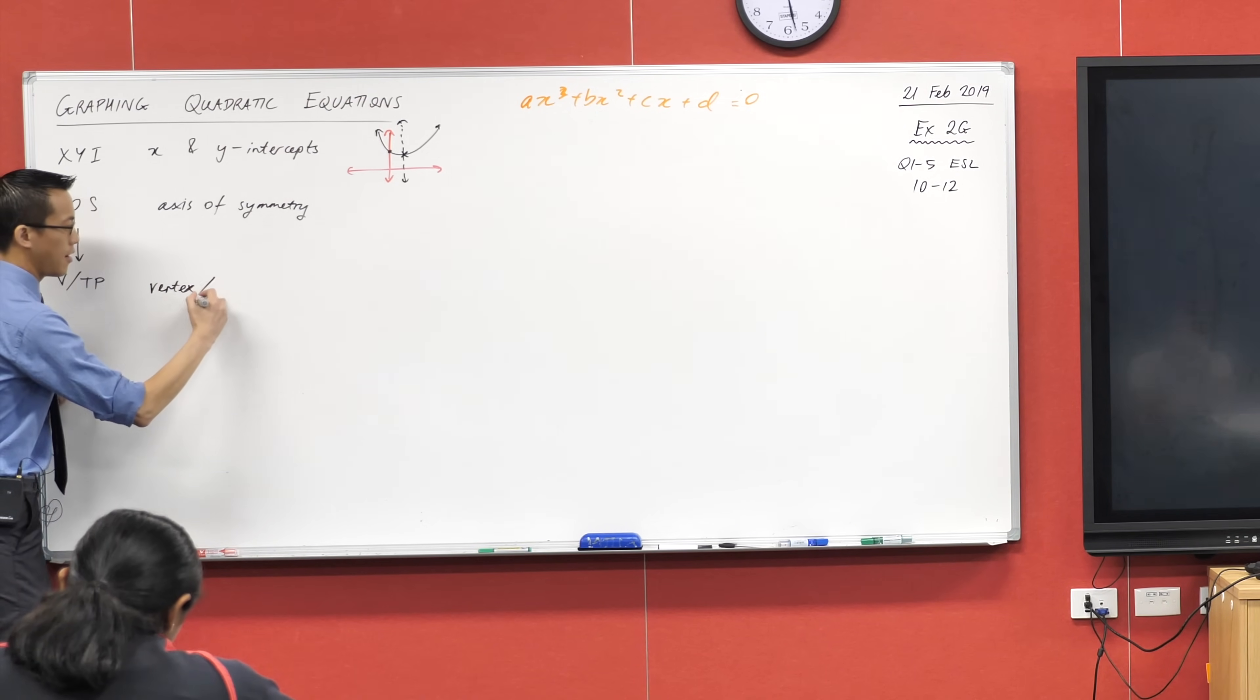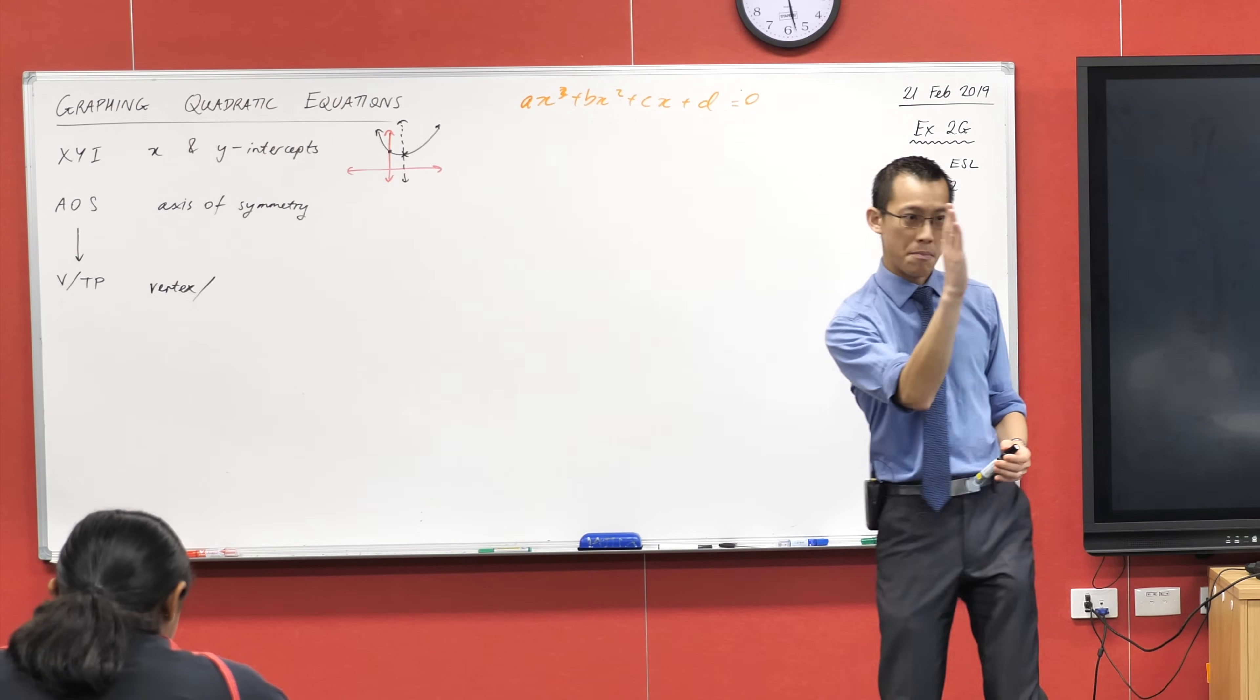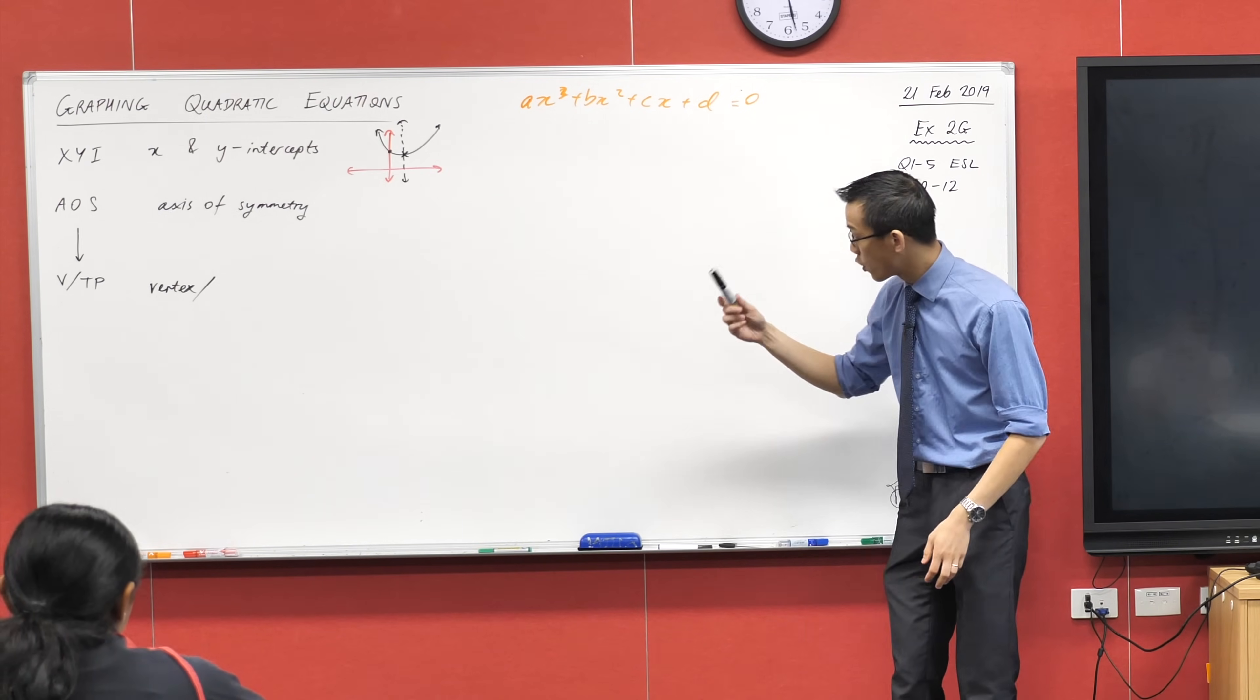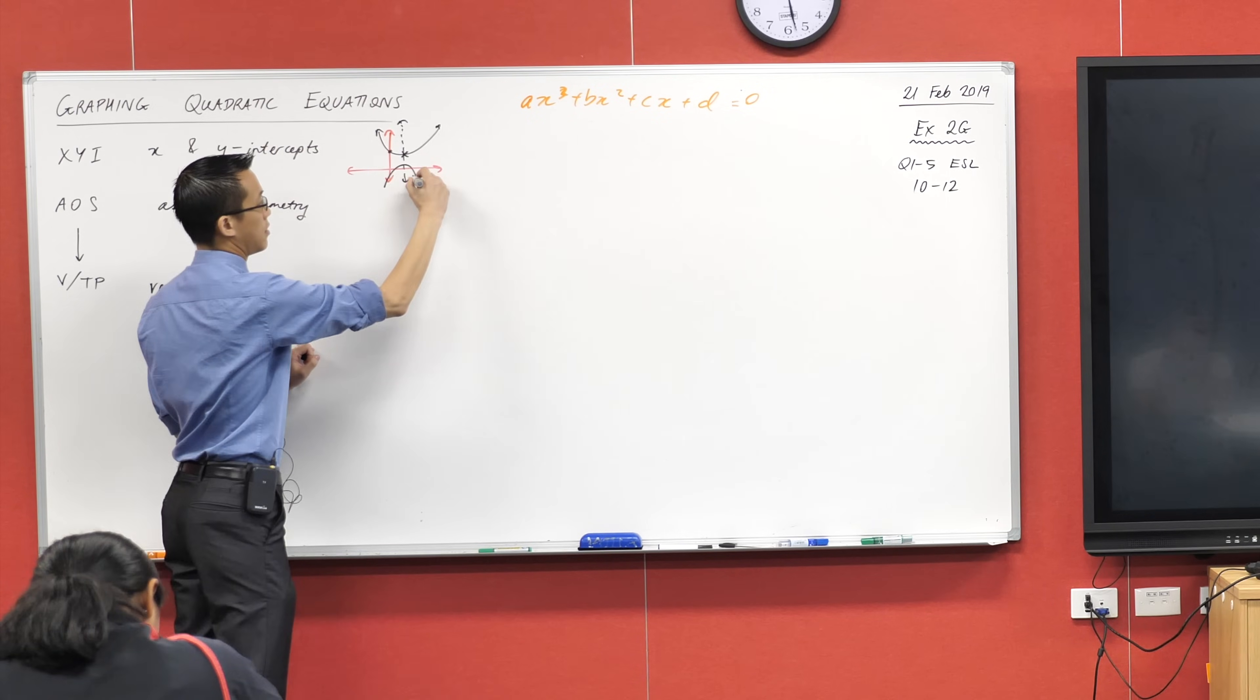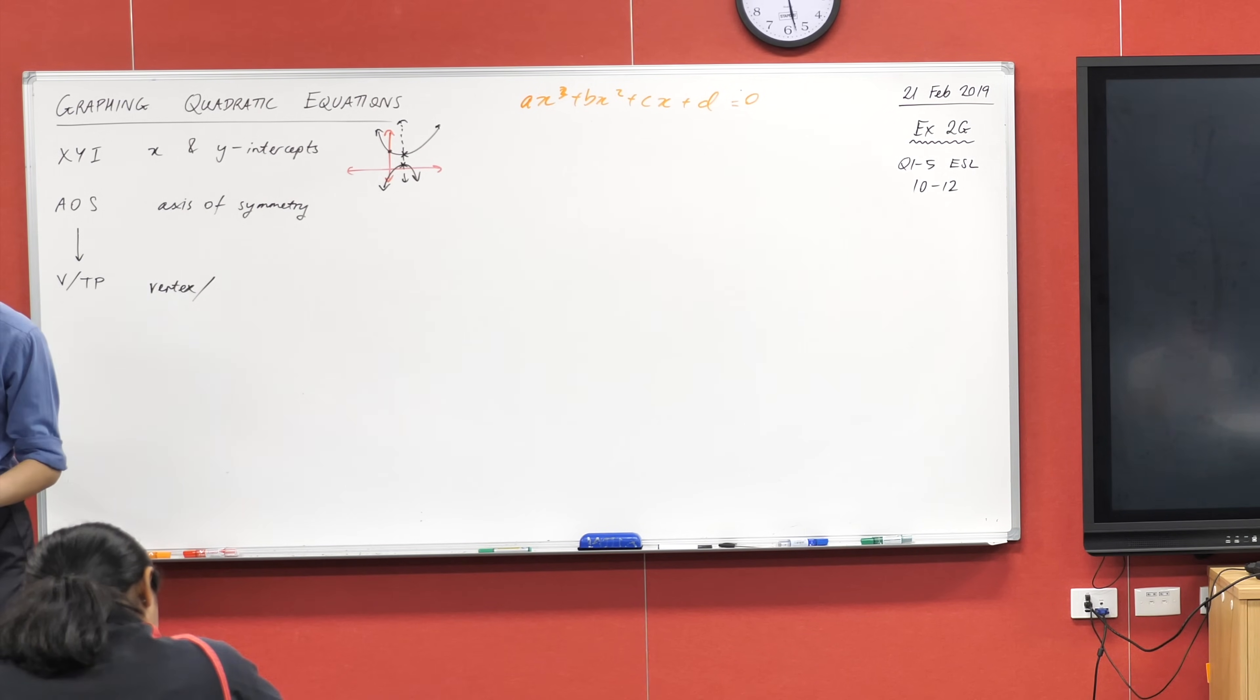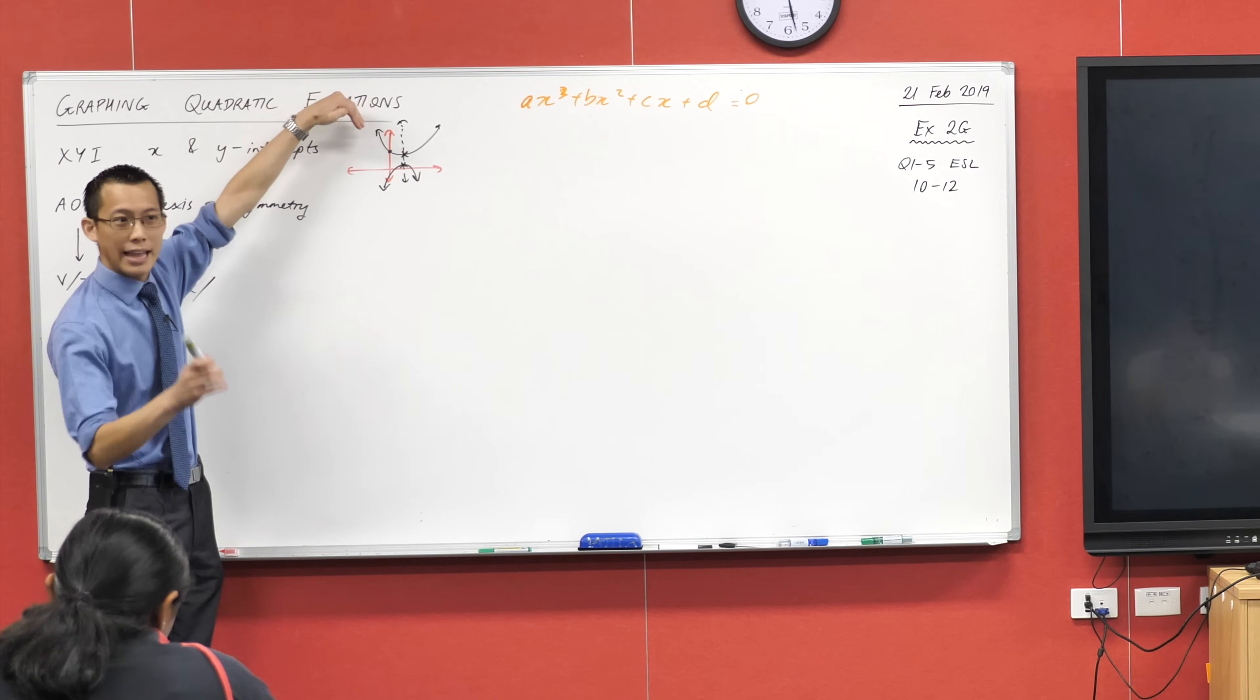Now, there's this other way that you can describe the vertex. It's not just the middle or like the bottom or the top. Do you notice, whether you've got a parabola that's facing up or if you have a parabola that's facing down, like that, the vertex, that middle spot is where the parabola, the quadratic equation, it kind of changes direction.